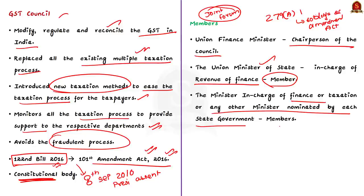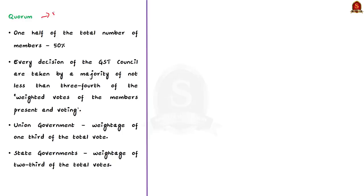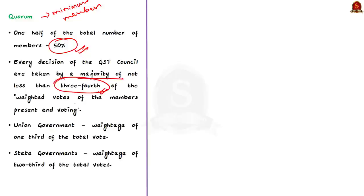As per the amended constitution, the GST Council will be a joint forum of the center and the states. The council consists of the following members: first is the Union Finance Minister, who is the chairperson of the council; second is the Union Minister of State in charge of Revenue or Finance as a member; third are the ministers in charge of finance or taxation or any other minister nominated by each state government as members. Note that it is not necessary for the state government to send their finance minister to the GST Council. The quorum of the GST Council is one half of the total number of members, that is 50% of members must be present.